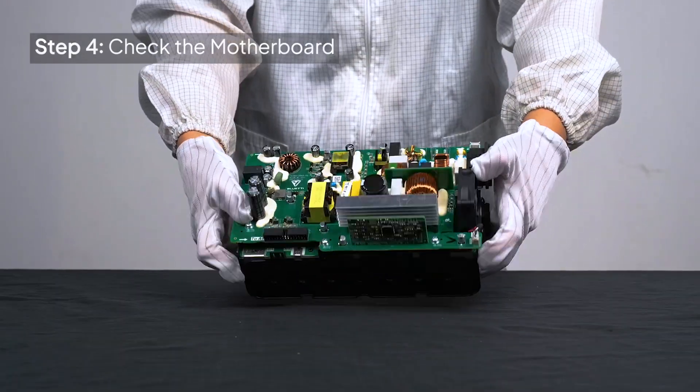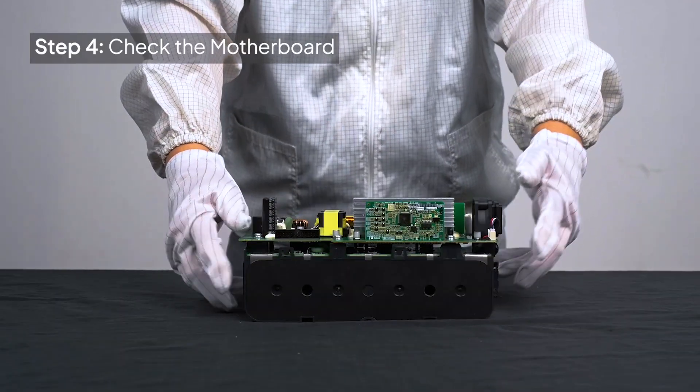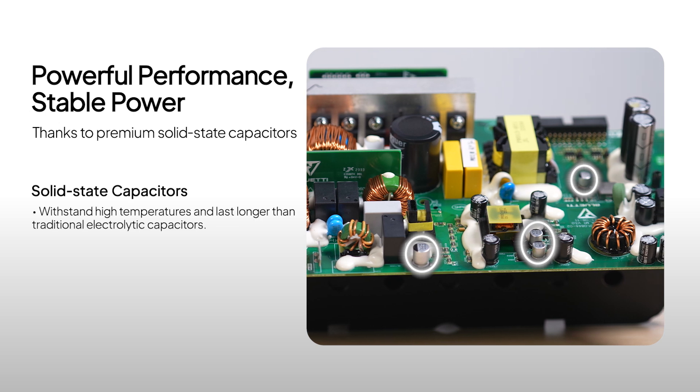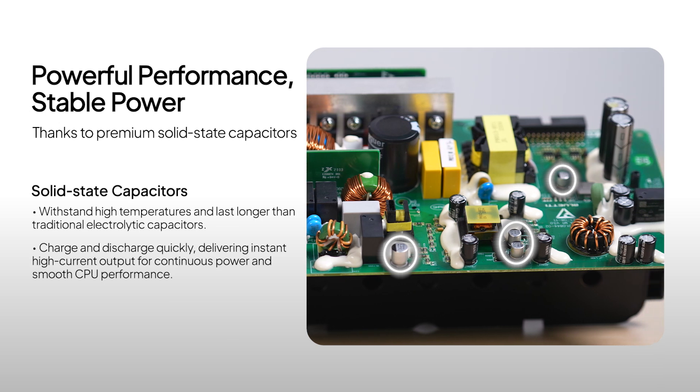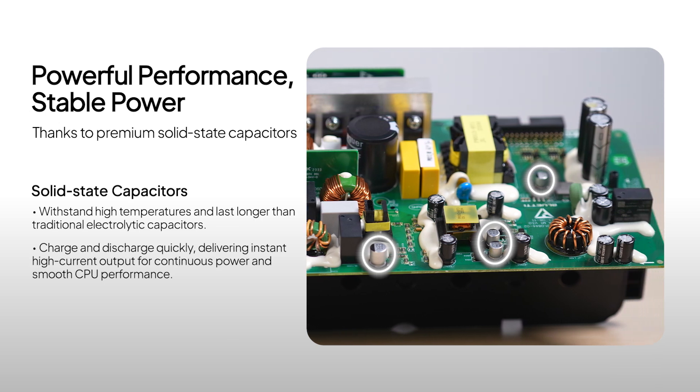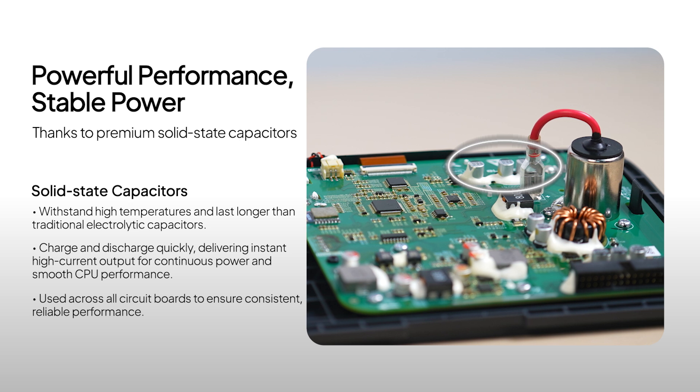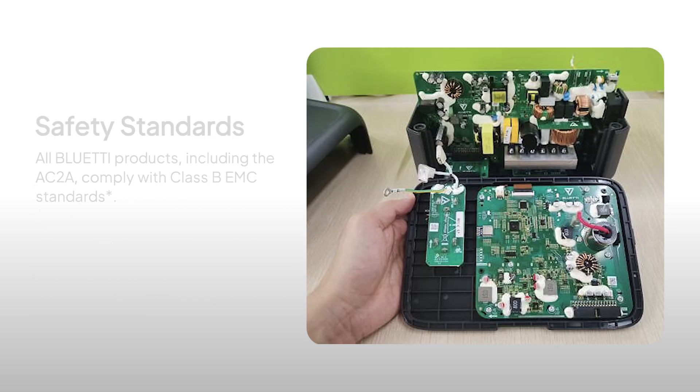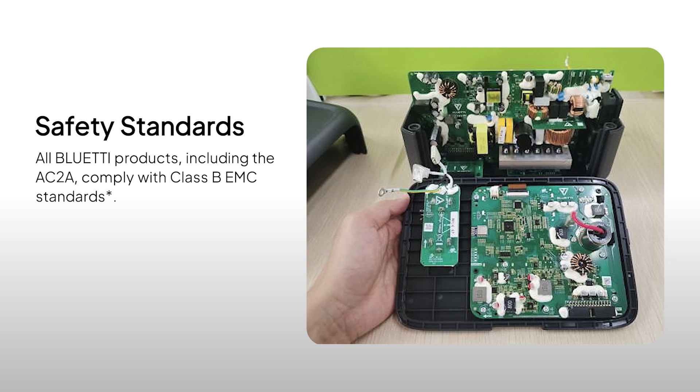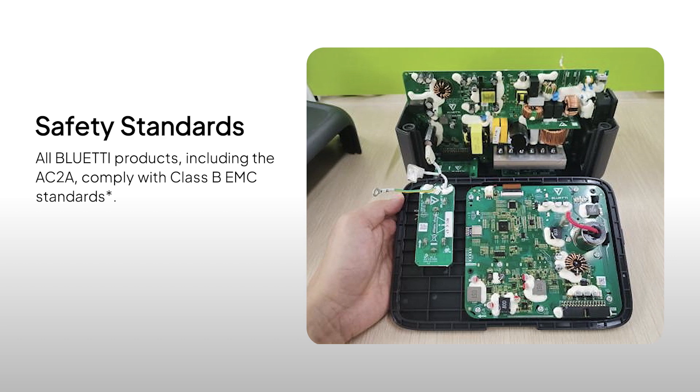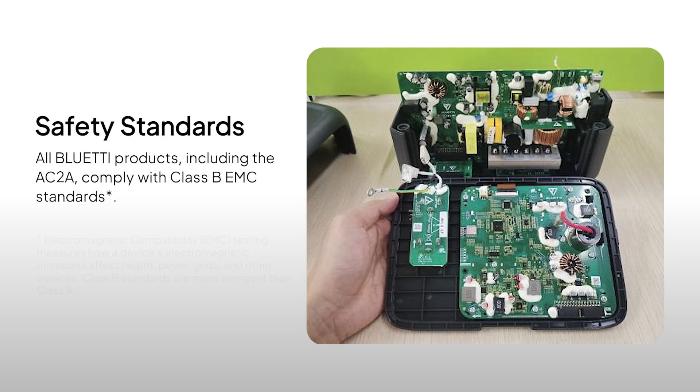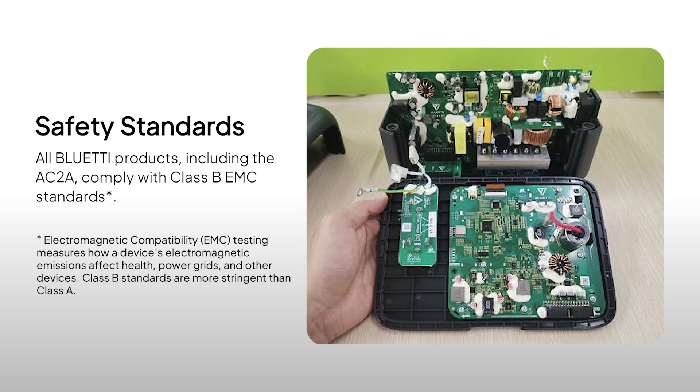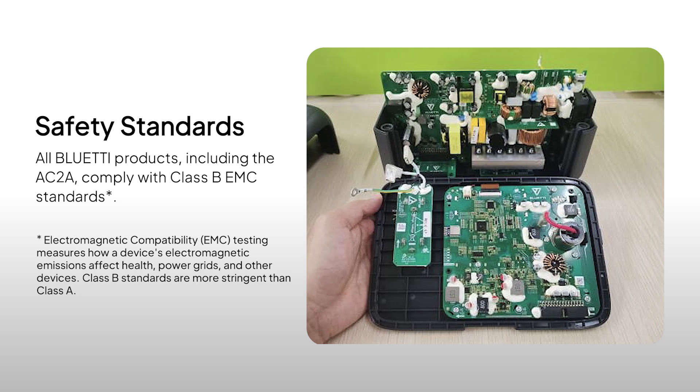At the core of the AC-2A is the motherboard. It adopts premium solid-state capacitors, which enhance motherboard performance and stabilize CPU operations. These capacitors are also used across other circuit boards to ensure overall stability and reliability. The input and output sections are equipped with high-quality components to deliver power reliably every time. The filter board meets the EMC Class B standard, which means it keeps both your devices and yourself safe from interference.